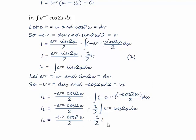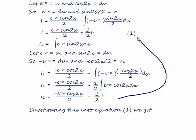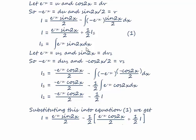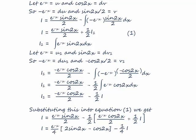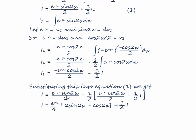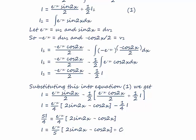So we substitute i1 back into equation 1. i equals e to the minus x·sine(2x) over 2, and with the minus signs giving a plus, we have minus a quarter times the bracket e to the minus x·cos(2x) over 2 plus a half·i. Taking e to the minus x over 4 outside the bracket, that becomes e to the minus x over 4 times (2·sine(2x) minus cos(2x)), minus a quarter·i. Taking the quarter·i to the left-hand side gives 5i over 4. Cancelling the 4s and dividing through by 5, i equals e to the minus x over 5 times (2·sine(2x) minus cos(2x)) plus the constant of integration.